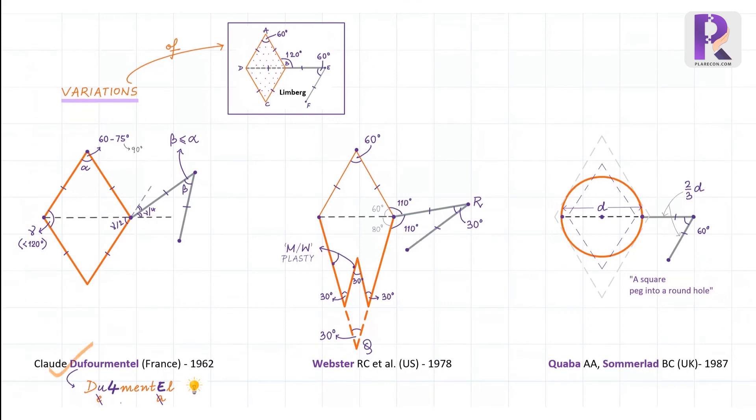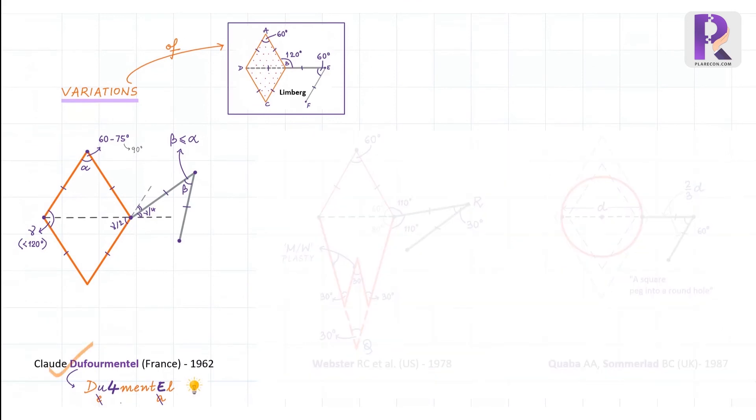The first is a Dufourmentel flap. In this modification, the defect still remains rhombic but the flap is not. Unlike Limburg's flap, here the smaller angle of the rhombic defect is more than 60 degrees, while the angle of the flap is less than the smaller angle of the rhombic defect.